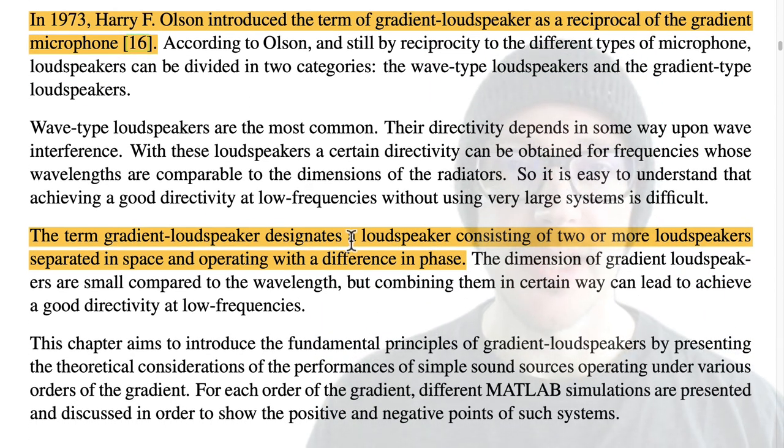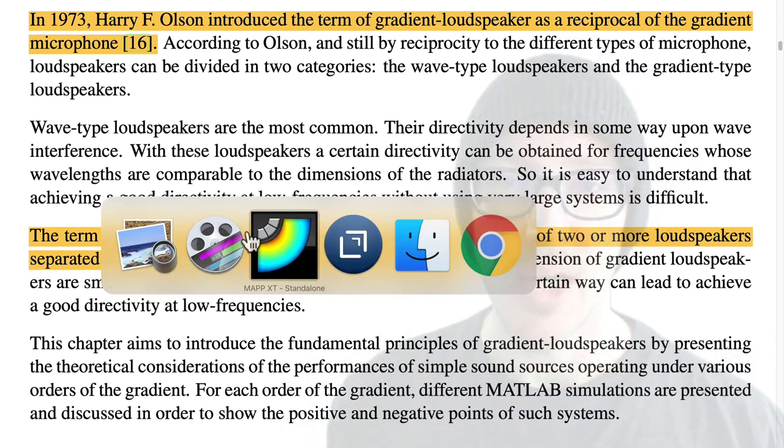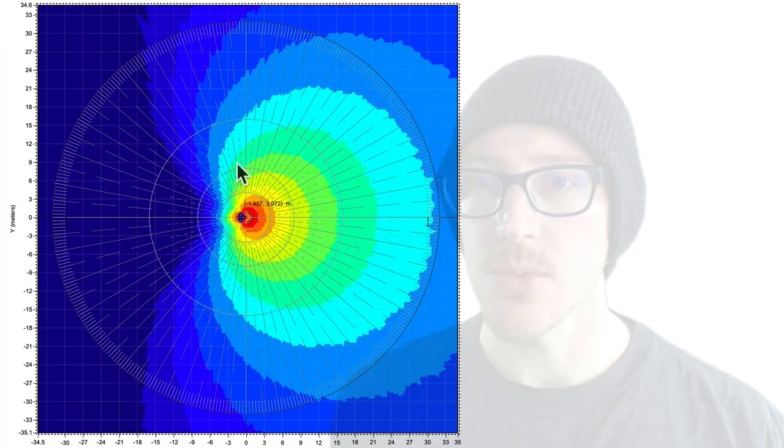And the term gradient loudspeaker designates a loudspeaker consisting of two or more loudspeakers separated in space and operating with difference in phase. So a little bit of a repetition of what we already heard. So that's the first answer to your question because that's how the array is designed. But let's look at the theory behind this. Why does this work?